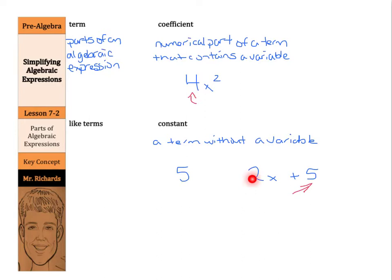Now, like terms. Like terms are terms that contain the same variable with the same power. Or, constants are also like terms. Now, what do I mean by that?